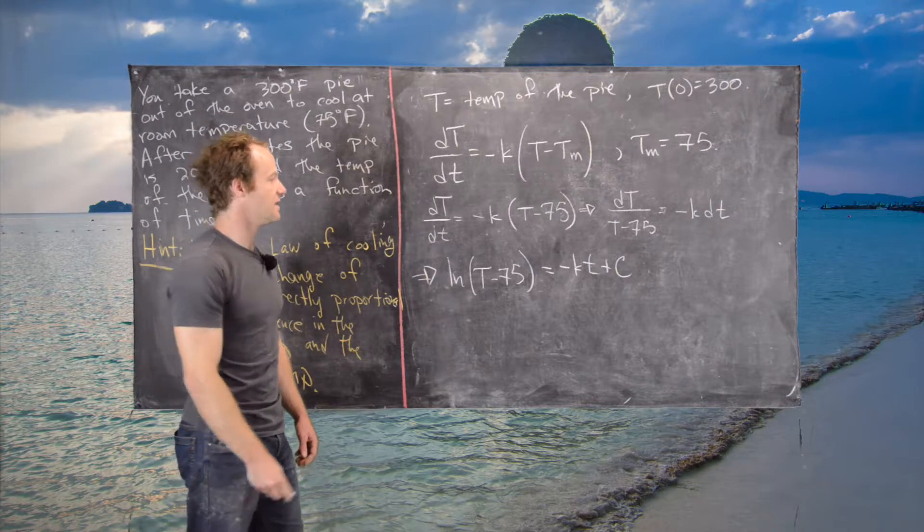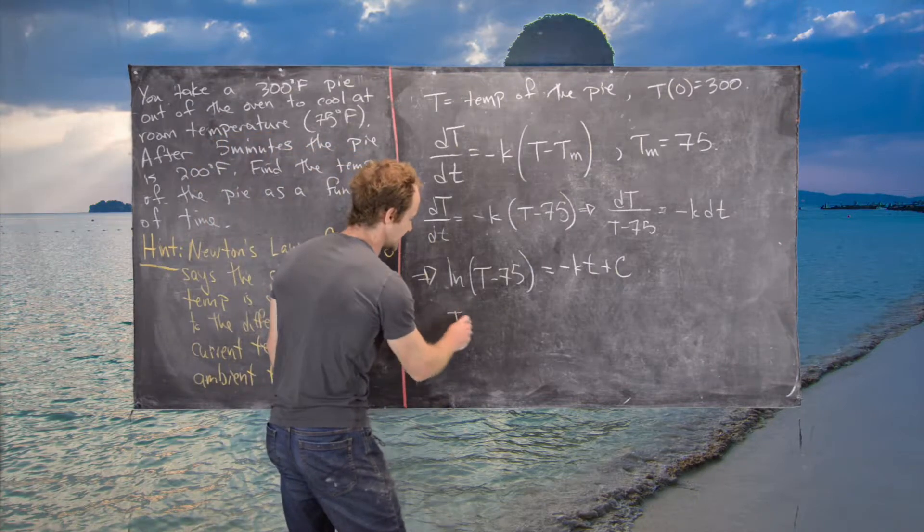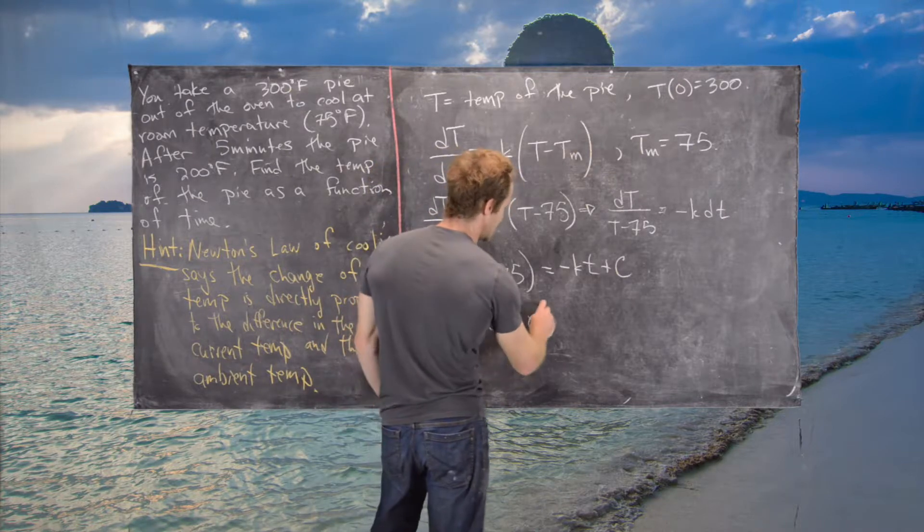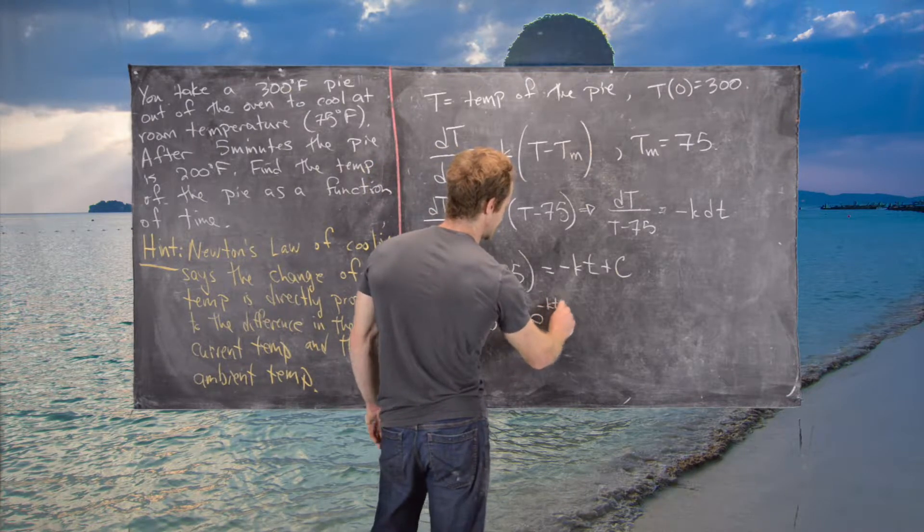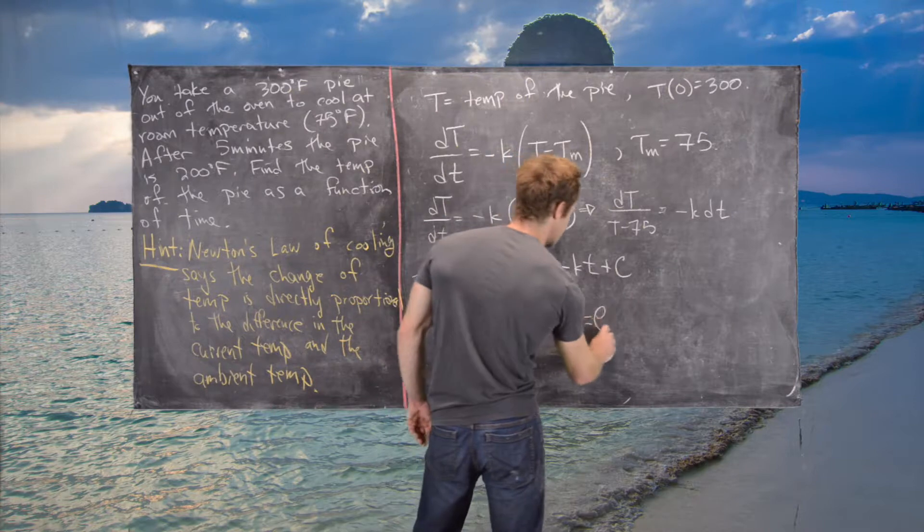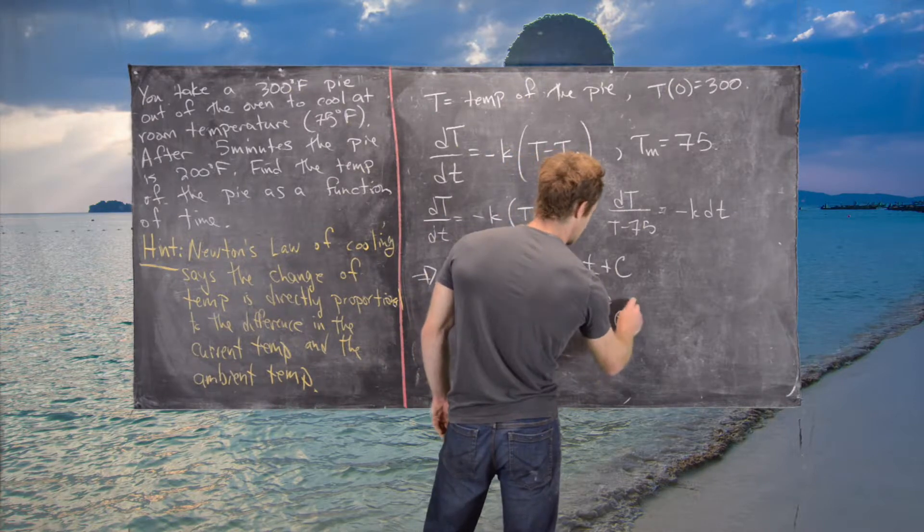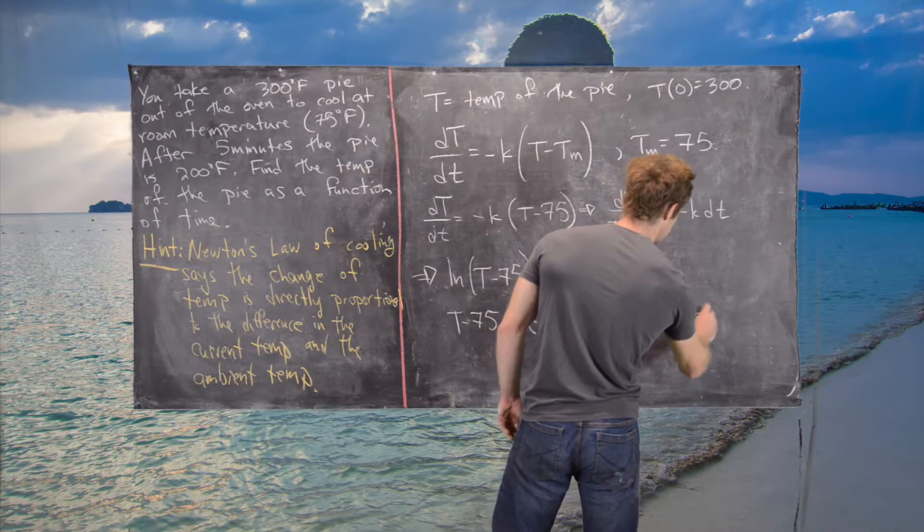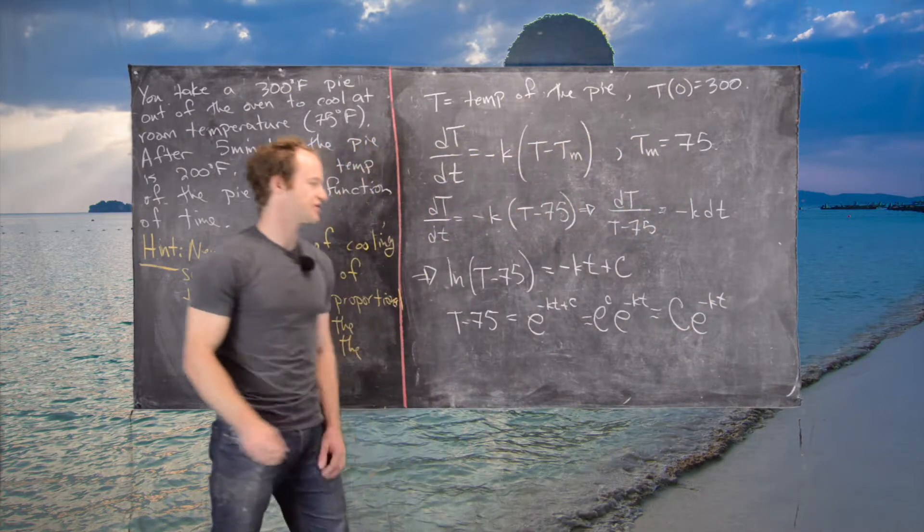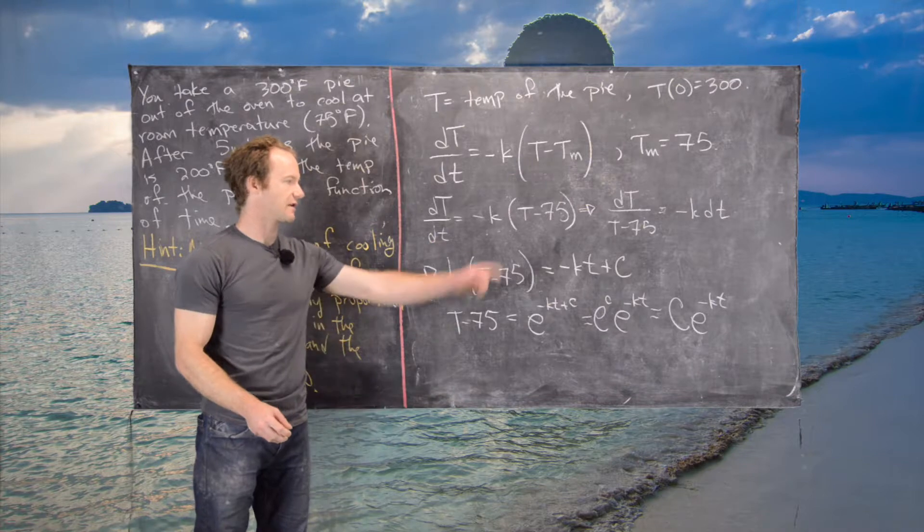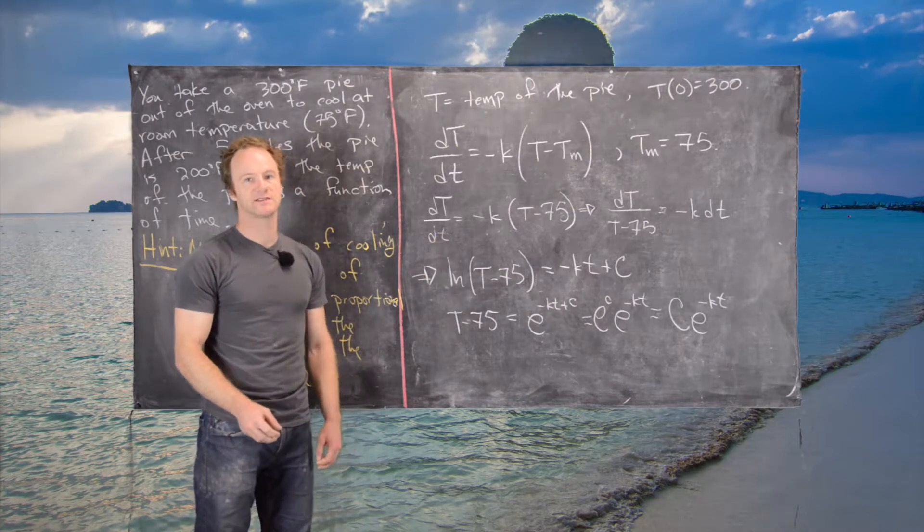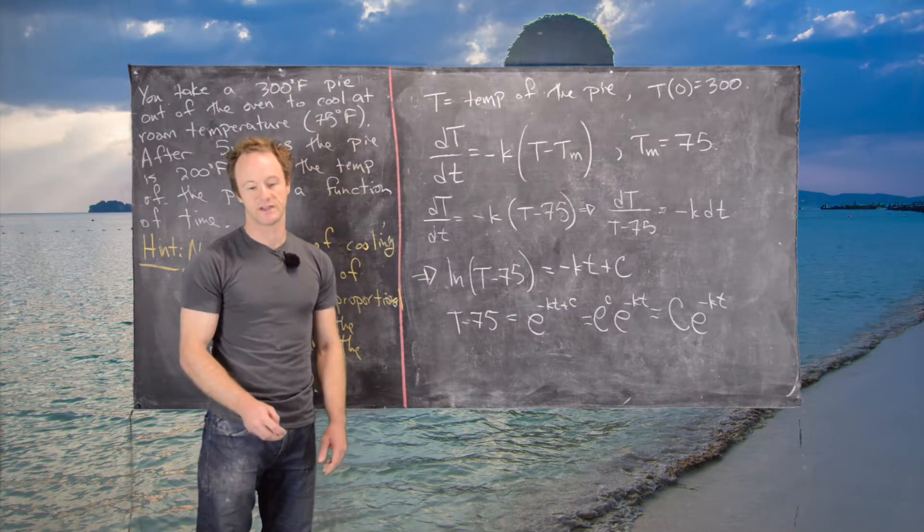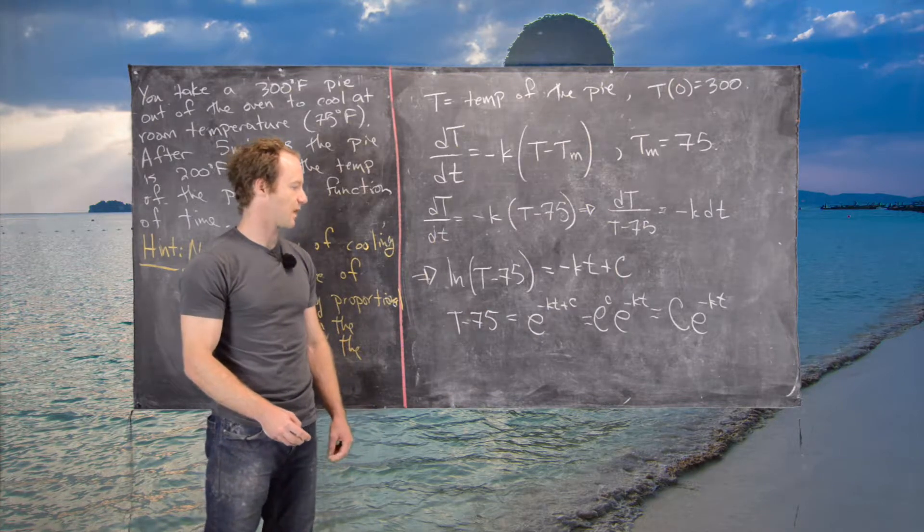That tells us T - 75 = e^(-Kt + C) = e^C · e^(-Kt). I'll replace e^C with a big constant C since that's still just a constant. So T - 75 = Ce^(-Kt).